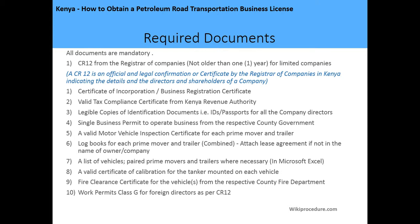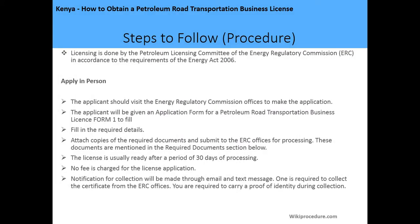You also need copies of identification documents of company directors — either national identity cards or passports — a single business permit, a valid motor vehicle inspection certificate for each prime mover and trailer, and logbooks for each prime mover and trailer. If vehicles are not in the company owner's name, provide copies of the lease agreement. You need a list of all paired prime movers and trailers in Microsoft Excel format, a valid certificate of calibration of the tanker mounted on each vehicle, a fire clearance certificate from the respective county fire department, and a Work Permit Class G for any foreign directors as per the CR12 document.